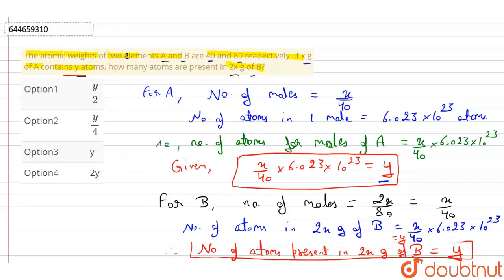Therefore, this is our answer: how many atoms are present in 2x grams of B? Y atoms are present. So our option would be: option 1 is wrong, option 2 is wrong, option 3 is correct, option 4 is wrong. So option 3 is our answer, it is y.